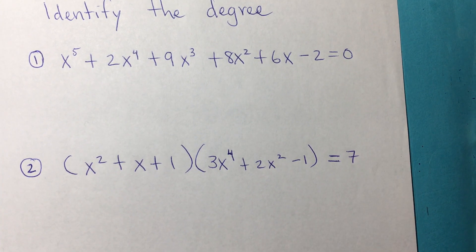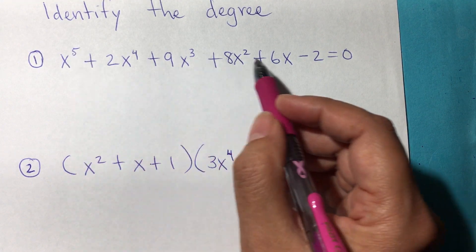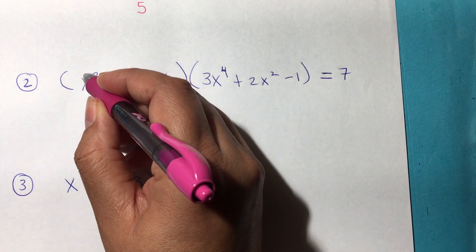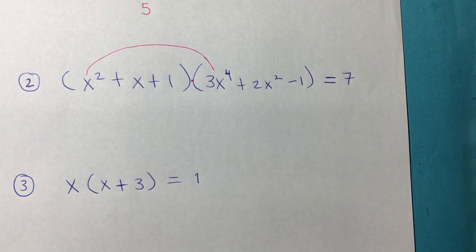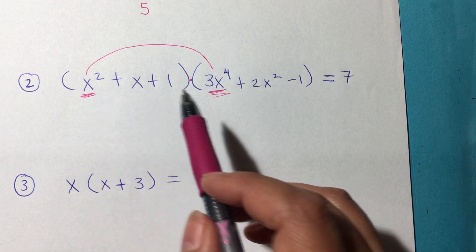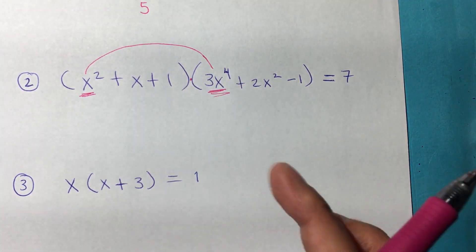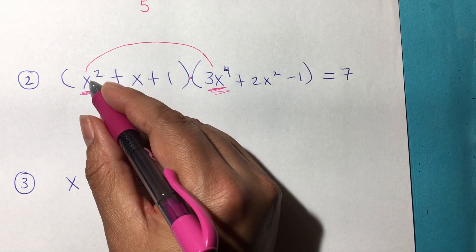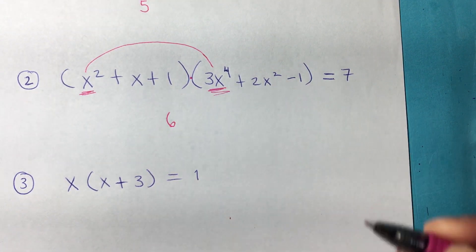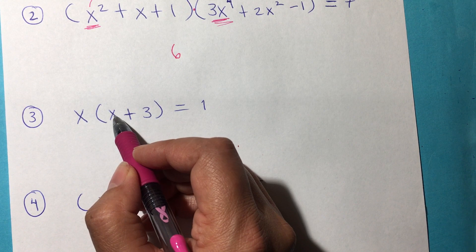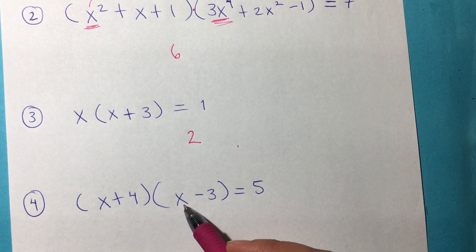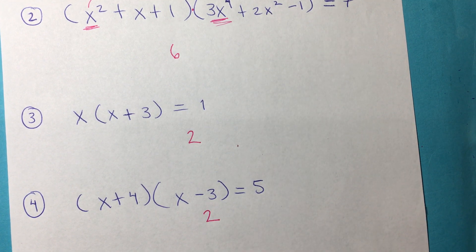Some more, identify the degree, very similar. The degree will be the highest exponent, which will be five. In here, we have to be careful. What you want to do is just multiply the highest, because this is multiplication. If there are two parentheses, that means you're multiplying. Get the highest from this one and the highest from the other. They might not be in descending order, so just look for the highest exponent in each parentheses. It's going to be x² times 3x⁴. In multiplication we just add the exponent, so the degree will be six. And here, x times x is x², so the degree will be two. And finally here, x times x again, also x², which is degree two.